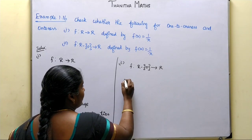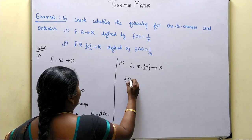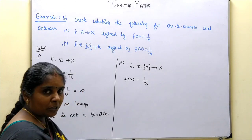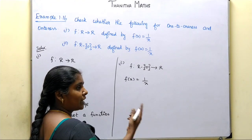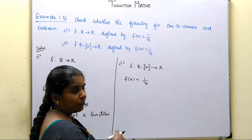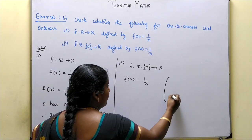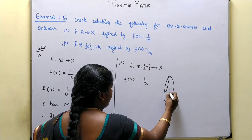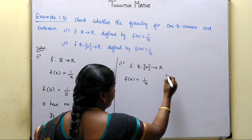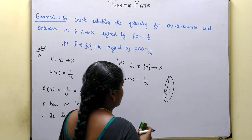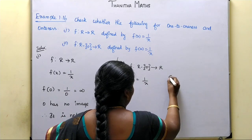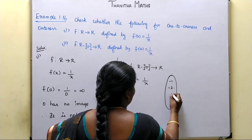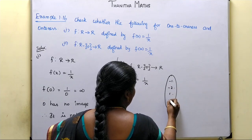Looking at f(x) = 1/x with the revised domain, all elements except 0 are included. There are no 0 elements — it has no preimage. The function maps elements like 1, 2, 3, 4, 5, and also minus 1, minus 2. We can remove 0, so the mapping is valid.